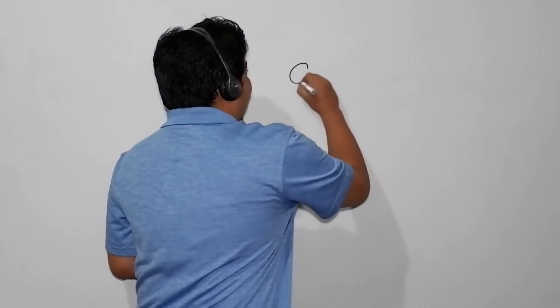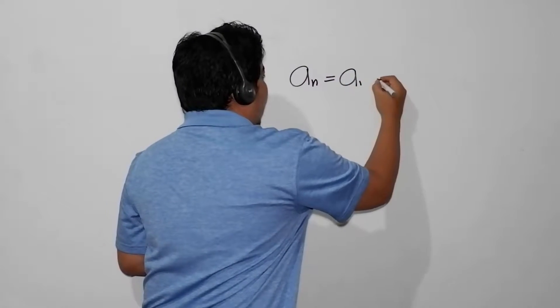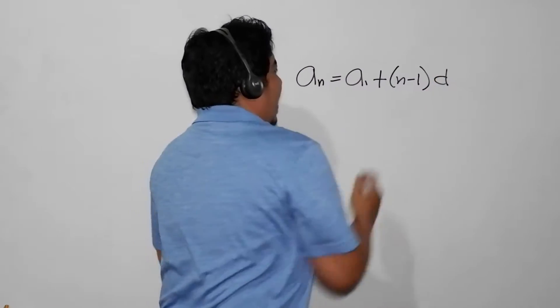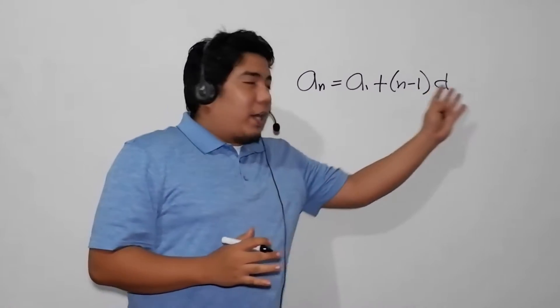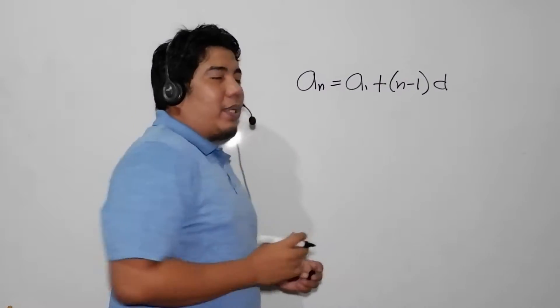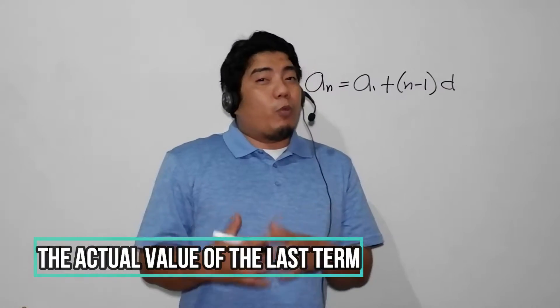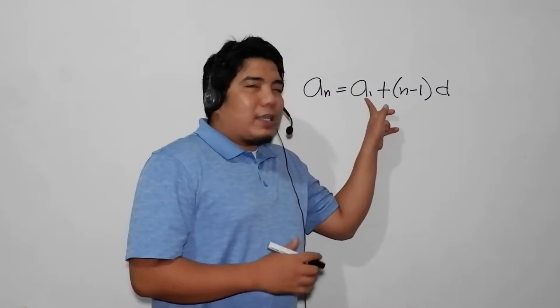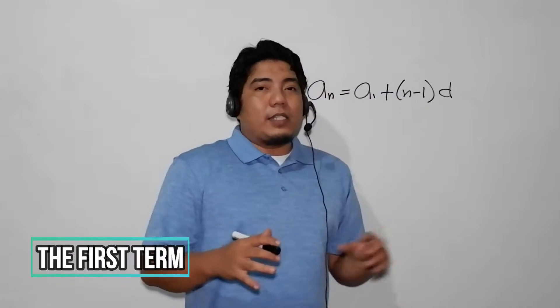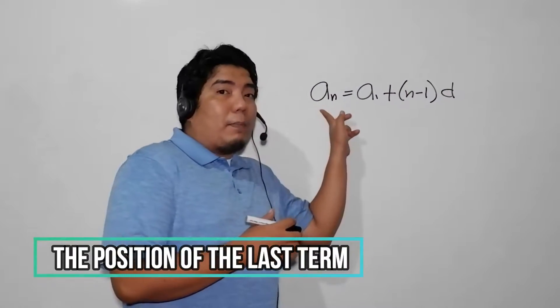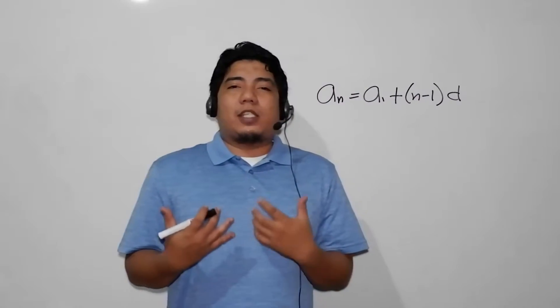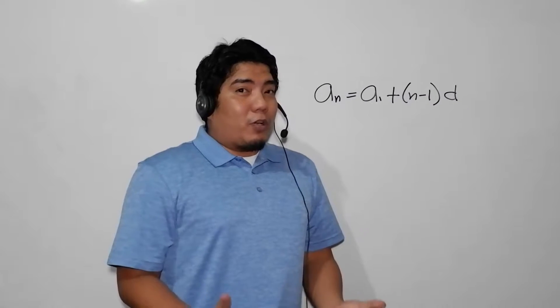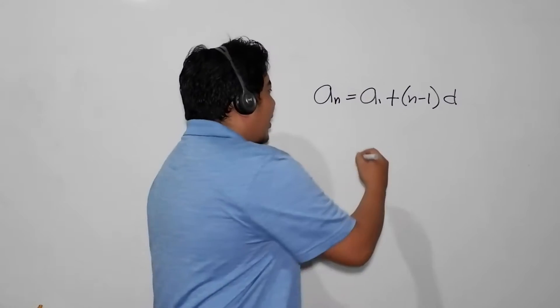We have also discussed the formula for an arithmetic sequence. The formula is: a sub n is equal to a sub 1 plus (n minus 1) times d. Let's talk about the parts of this formula. A sub n is the value of the term we are talking about — commonly this is also the last term. A sub 1 is known as the first term. N is the position of the term being discussed. And d is the common difference.